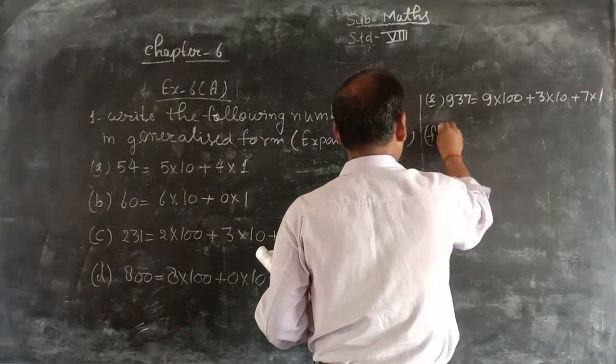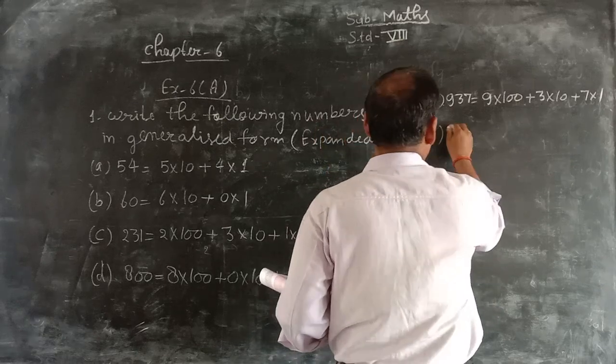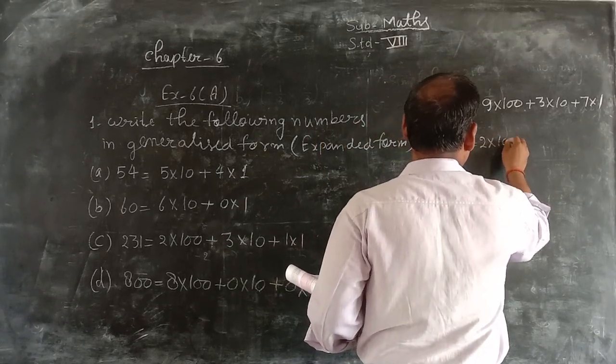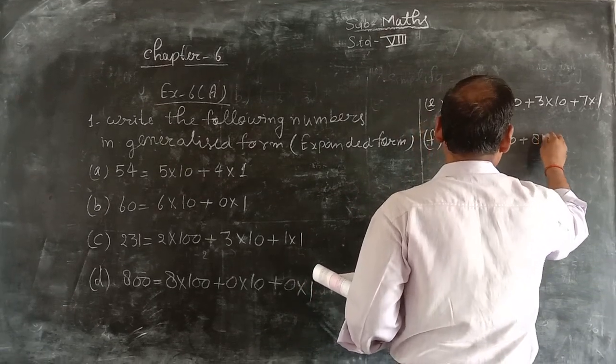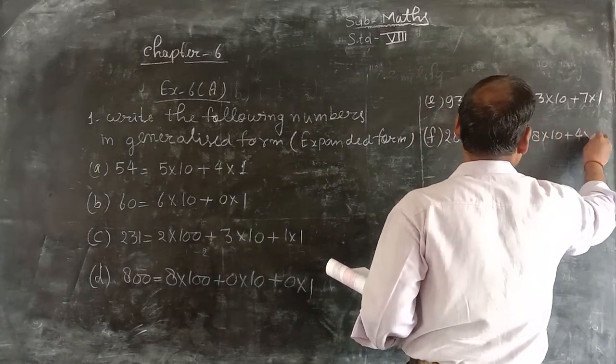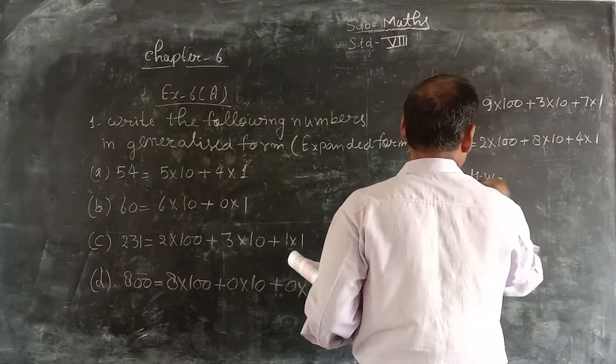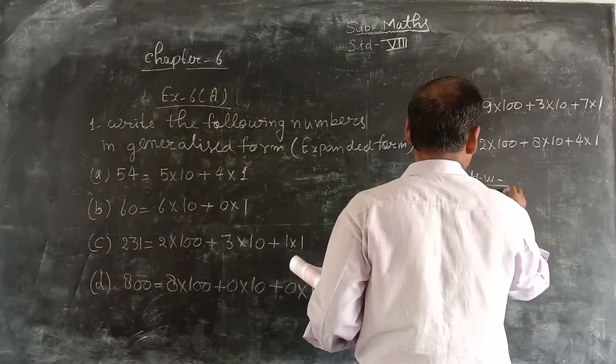Part number f, 241. 2 multiply 100 plus 4 multiply 10 plus 1 multiply 1. Part number g, 986.